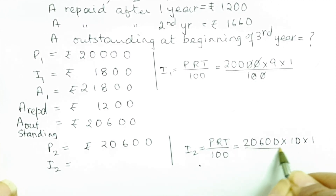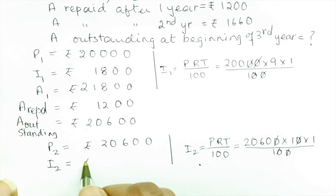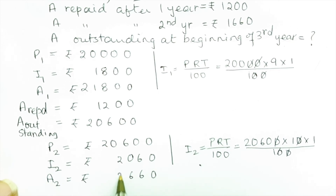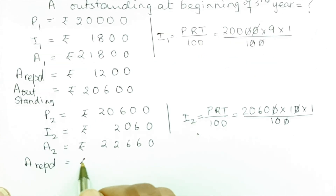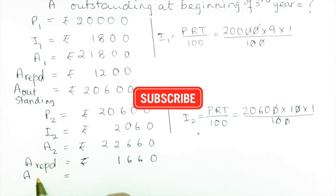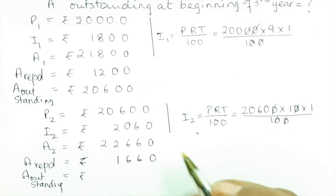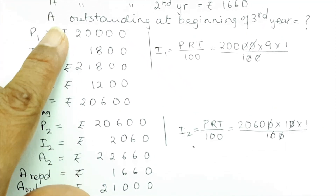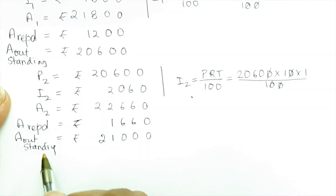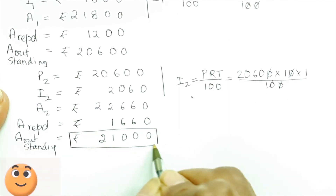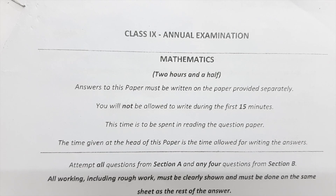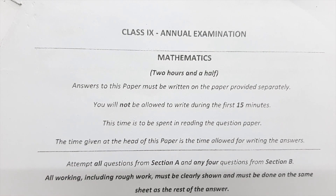For year two: P2 = ₹20,600, rate = 10%, time = 1 year; Interest I2 = ₹2,060. Amount at end of year two = ₹22,660; after repaying ₹1,660, the outstanding balance is ₹21,000. The amount outstanding at the beginning of the third year is ₹21,000. I'll end this video here and solve the remaining questions soon — look out for my online course in the description box.